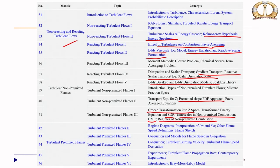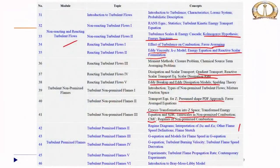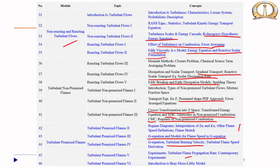Then we went into turbulent premix flames, where we discussed at length the concepts of regime diagrams, the interpretation of the Damköhler number and Karlovitz number, flame speeds, and flame stretch concepts. We showed the G-equation and the models for flame speed in the G-equation. Then we looked into turbulent burning velocity and turbulent flame derivation, showed contemporary experiments of turbulent flame propagation rate, and finished with the Bray-Moss-Libby model.